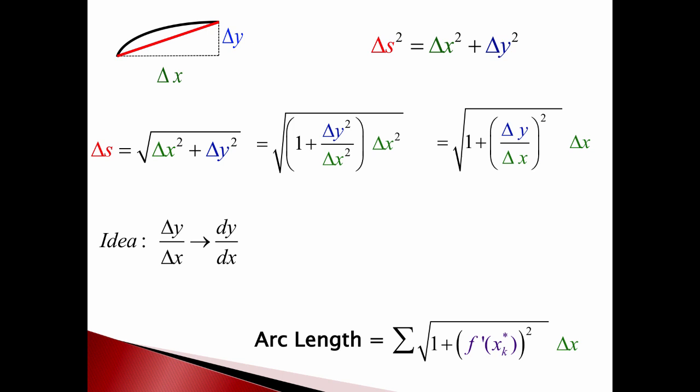Before we take the limit, take the limit as all the pieces get together and we get this derivative squared inside the square root. Add all those pieces up and finally take the limit as all the pieces get smaller and smaller.